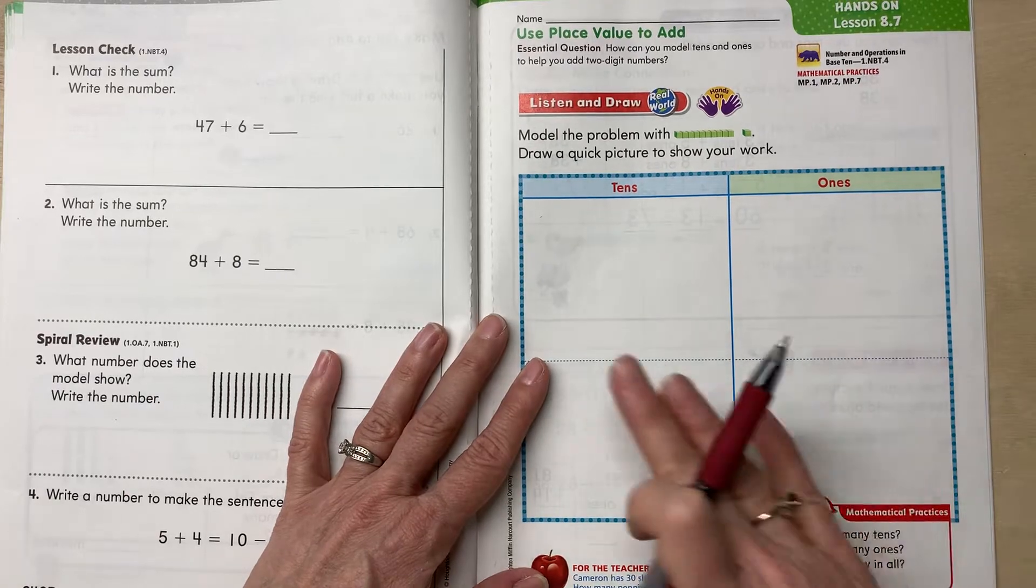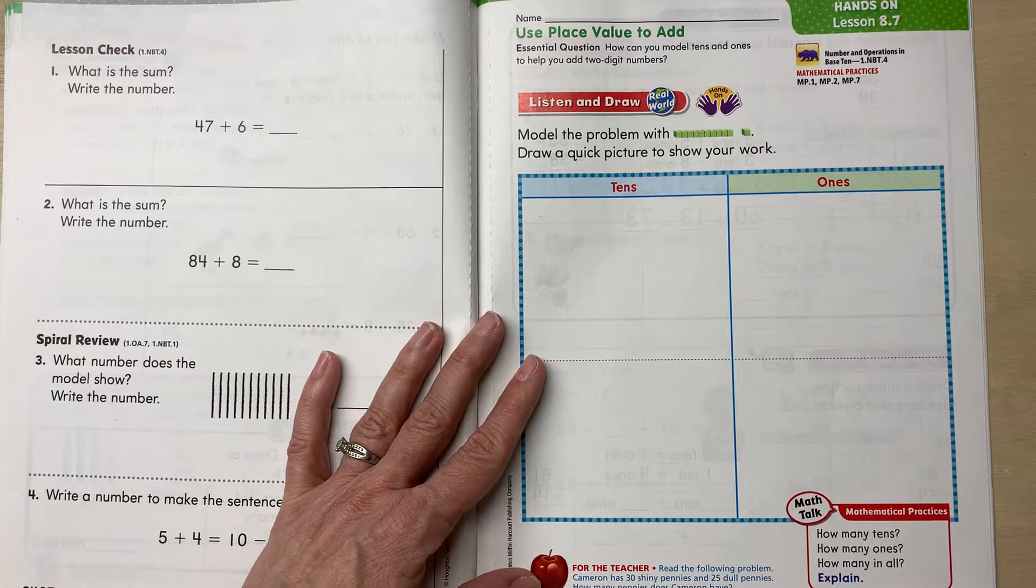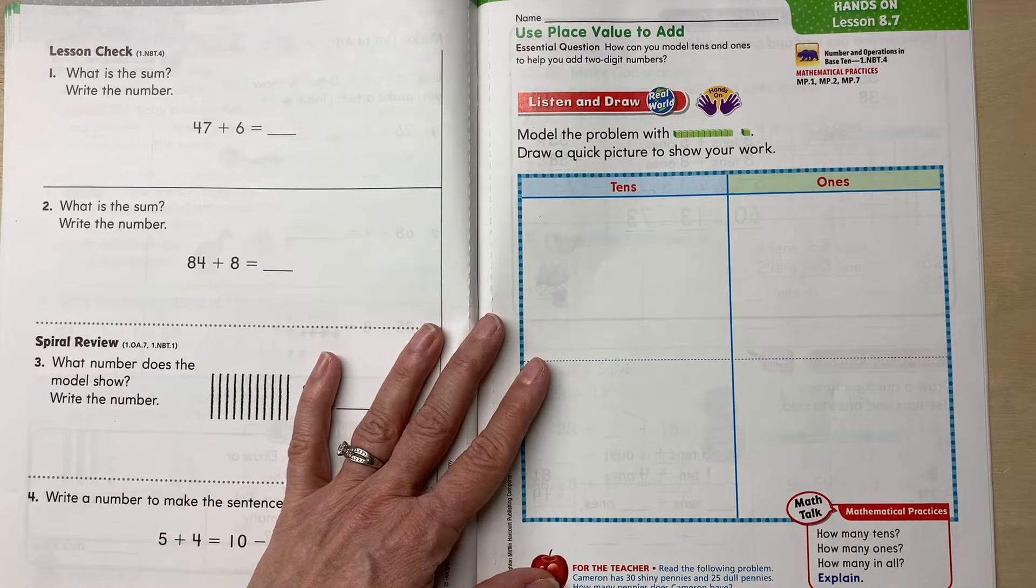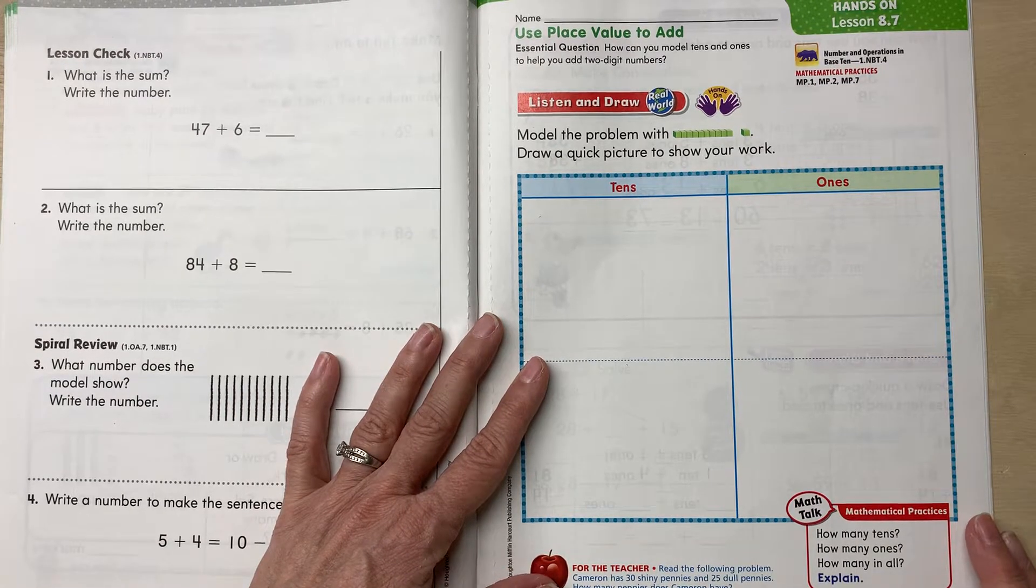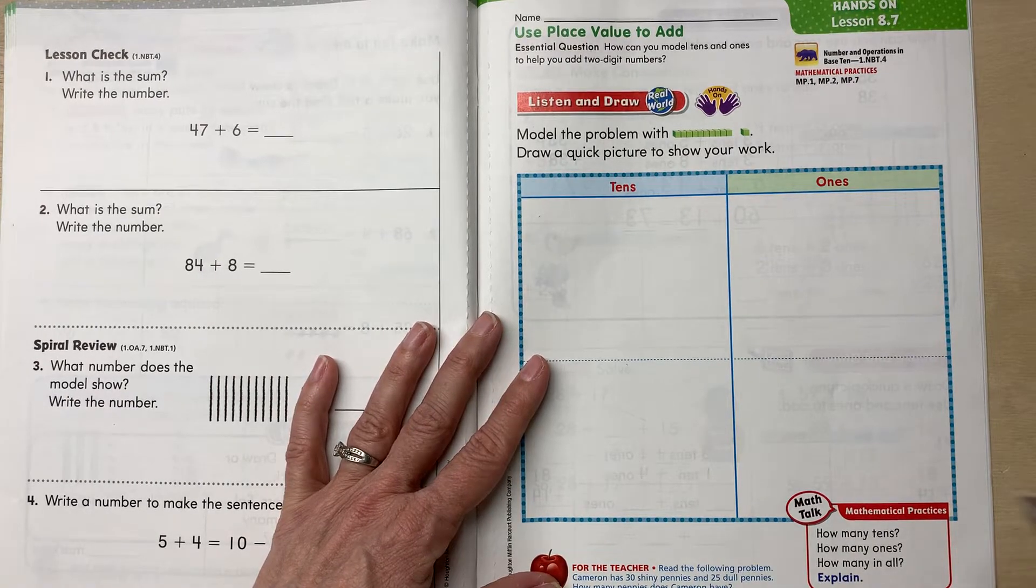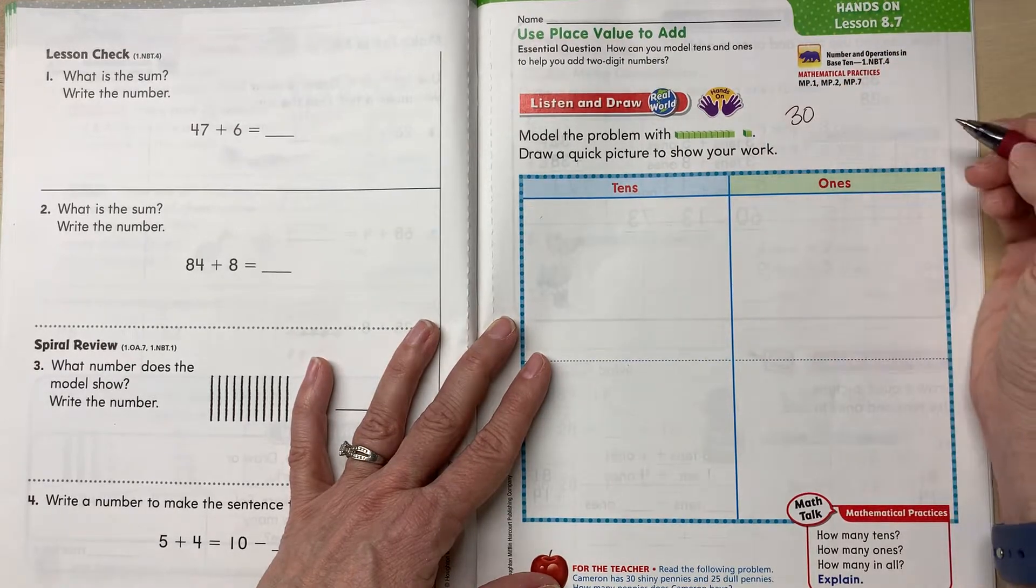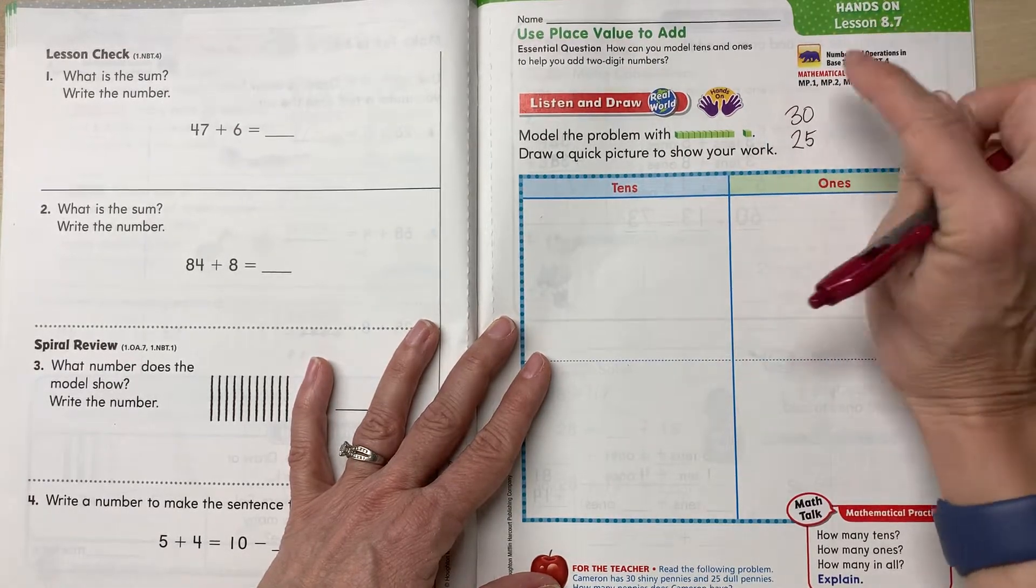All right, so listen to our story, and we're going to go ahead and draw a picture, tens and ones on each side here. So Cameron has 30 shiny pennies and 25 dull pennies. How many pennies does Cameron have? All right, so let's write our numbers just so we know. We have 30, and then we have 25, and we want to know how many all together.